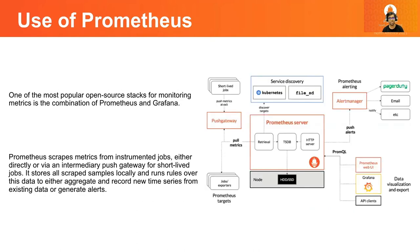How can we do that? We can do that with the help of Prometheus. Prometheus helps to scrape data or metrics from instrumented jobs either directly or indirectly with the help of short-lived jobs. It is capable of storing all these scraped samples locally and runs rules over this data to either aggregate or record new data from the existing data, or to help generate alerts. One of the most popular stacks to use for monitoring metrics is the combination of Prometheus — which measures the metrics — and Grafana — which helps to actually create alerts.